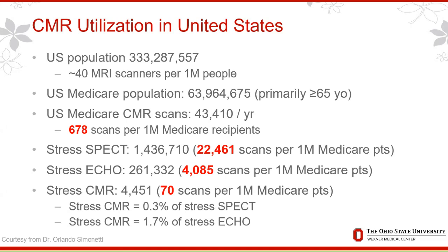Based on the U.S. Medicare population of approximately 64 million, there were about 43,000 CMR scans per year, representing about 678 scans per 1 million Medicare patients. Compare that to stress imaging: stress SPECT has over 22,000 scans per 1 million, stress echo about 44,000 per 1 million, and stress CMR coming in last at 70 scans per 1 million — representing approximately 0.3% of SPECT and 1.7% of stress echo. This disparity is even worse in rural compared to urban communities.